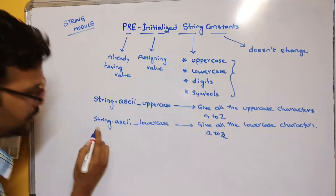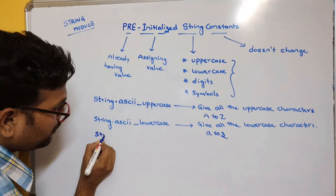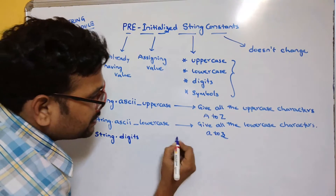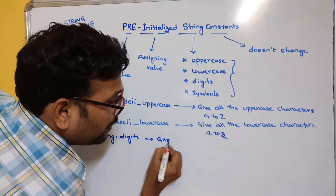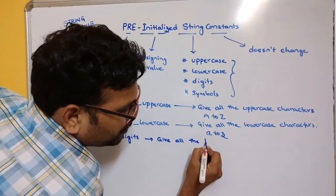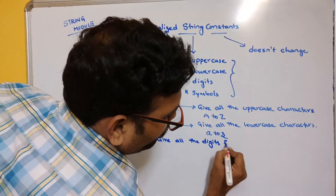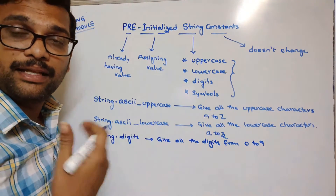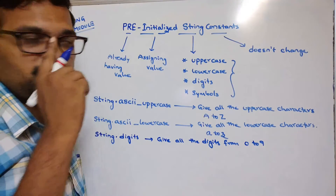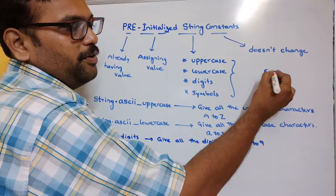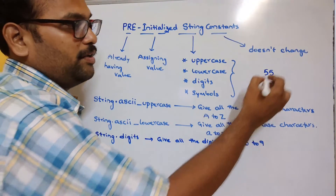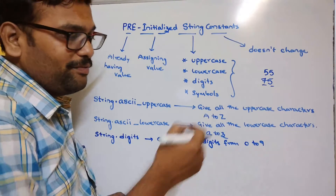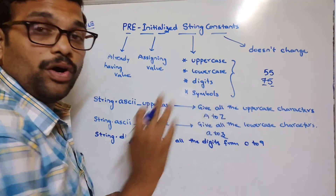Next is string.digits. This will give all the digits from 0 to 9. These are only the digits — every number is represented with combinations of 0 to 9. For example, 55 is a combination of digits from 0 to 9, and 75 similarly uses digits in that range.